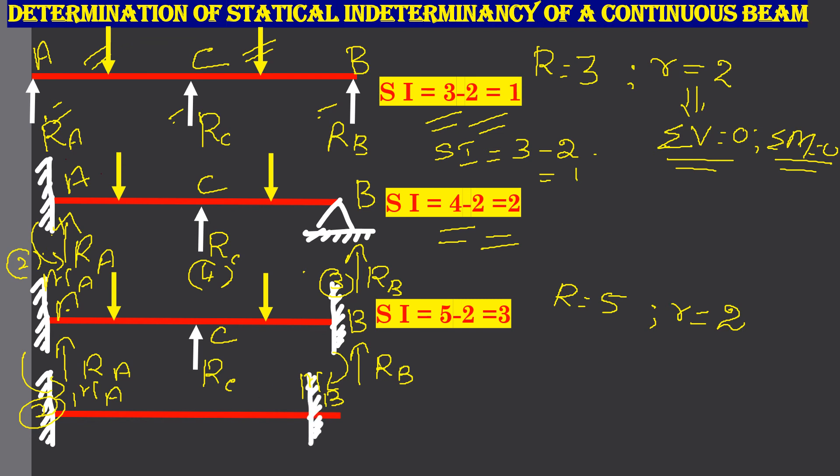It is fixed at A, fixed at B and you have a hinge at C. When a hinge is introduced in your beam, your equilibrium equation becomes plus 1. Here your statical indeterminacy becomes R minus r minus N where N is the number of hinges. Here R is equal to, you have 2 reactions here, 2 reactions here. So, R is 4 minus small r is 2. Number of equilibrium equations is 2 minus N is 1. N is the number of hinges. So, you have 1 hinge.